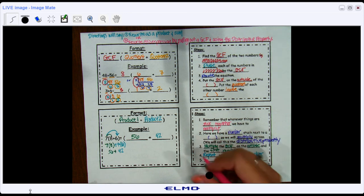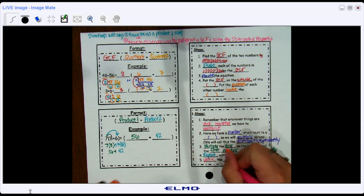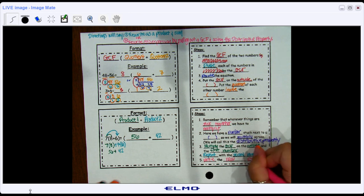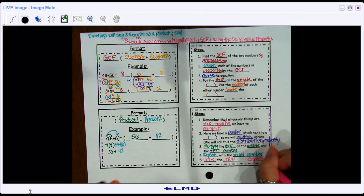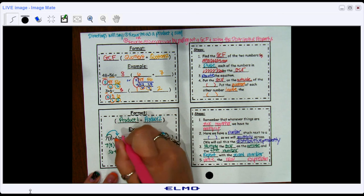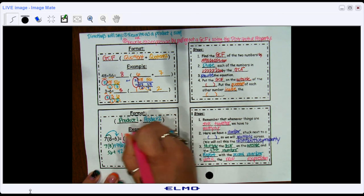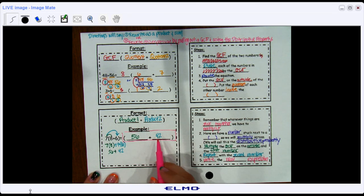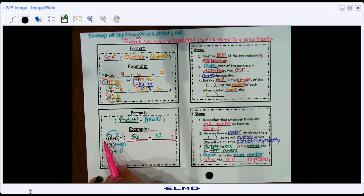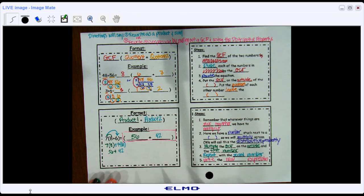After you're done with that, you have just written the new expression. So I would put that up on my line right here. This would be my answer: 56 plus 42. That represents the same thing as 7 times 8 plus 6. And, again, what this is doing is this is kind of just like we're checking our things up above.